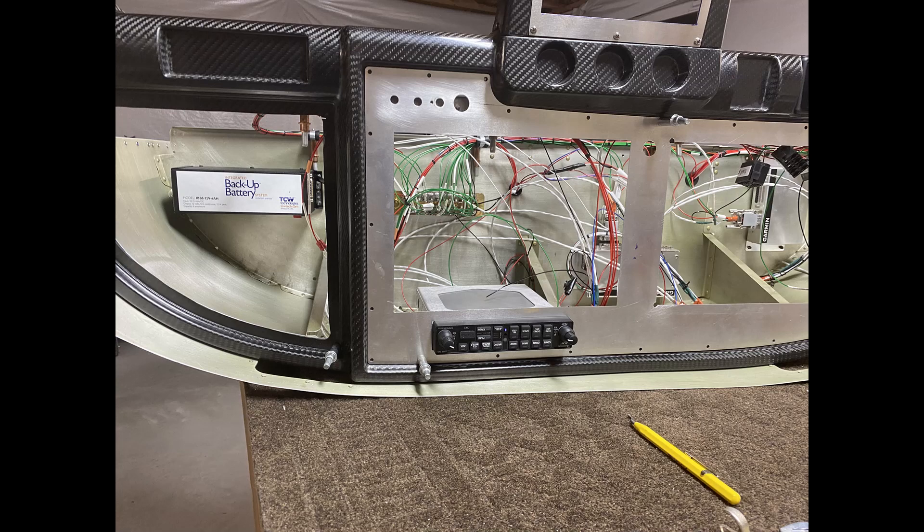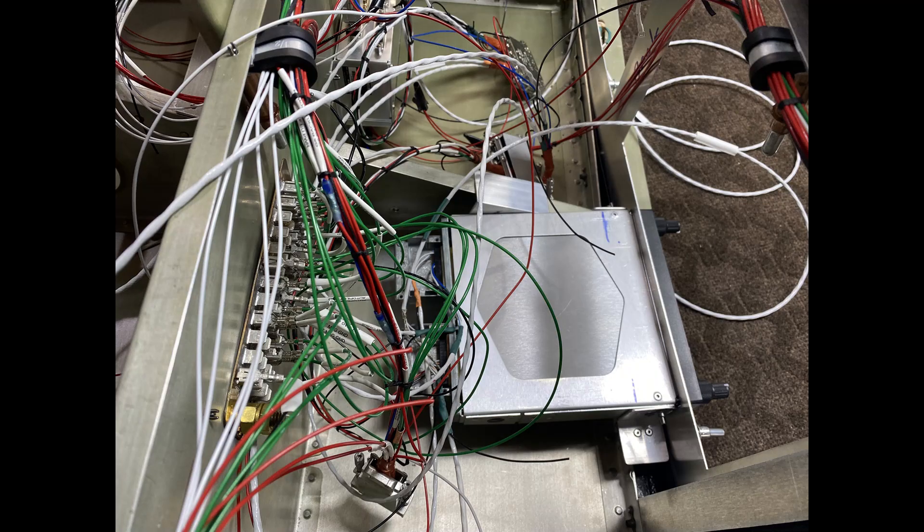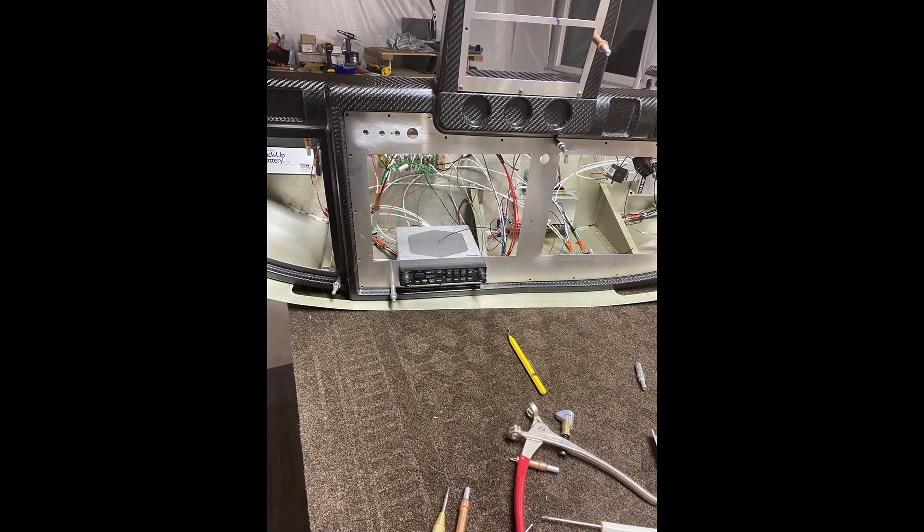But mostly about the mounting of the actual GMA245 audio panel, which I call radio many times. And also a quick update on a slight change I had to make to how I was doing the wiring for the GTN650 with the backup power. It just has to do with it doesn't have redundant pins like most of the Garmin equipment. Pretty straightforward, but I needed to get it in. Anyway, hope you enjoy it. Cheers.